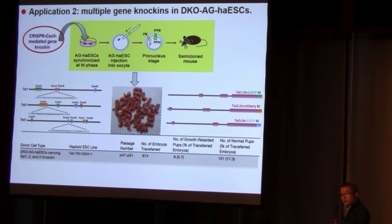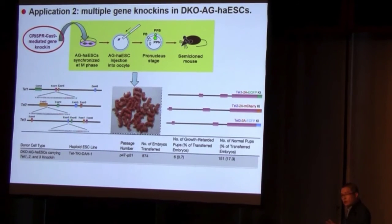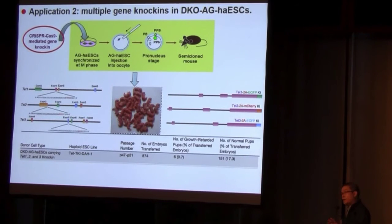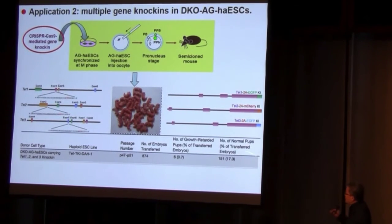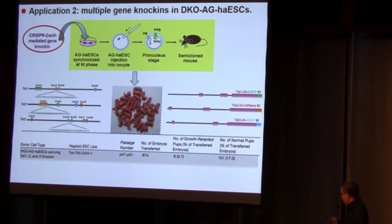Secondly, we can do multiple gene knock-in in our haploid cells. We produced haploid cells carrying TET1/2/3 knock-in genes, and by injection of these cells into oocytes we can efficiently reproduce mice carrying three knock-in genes.